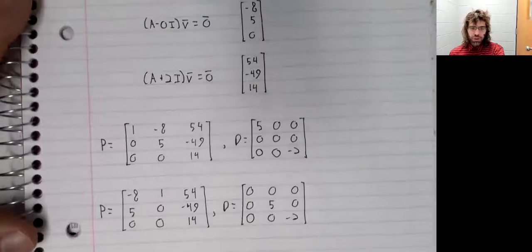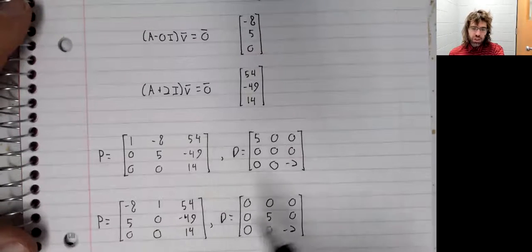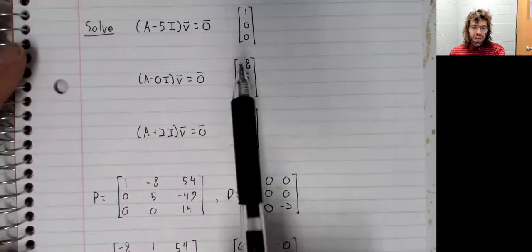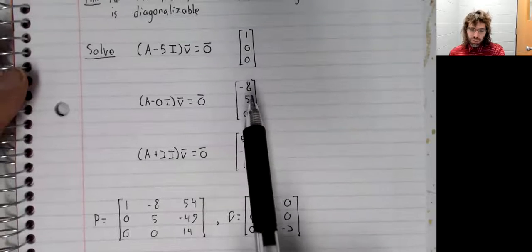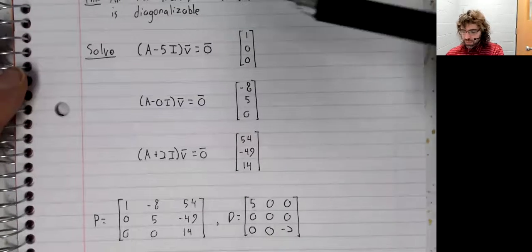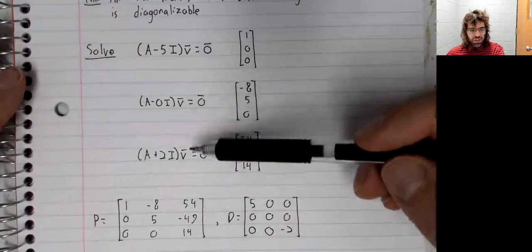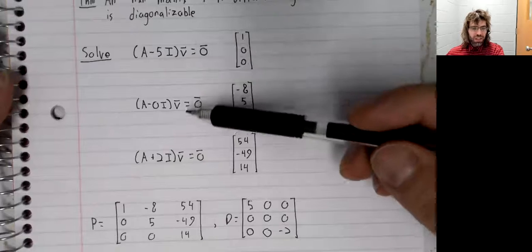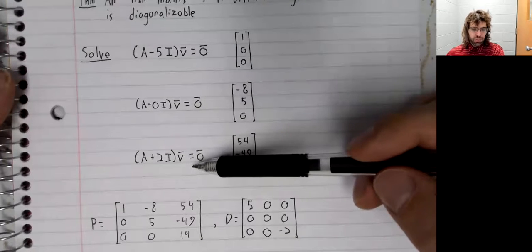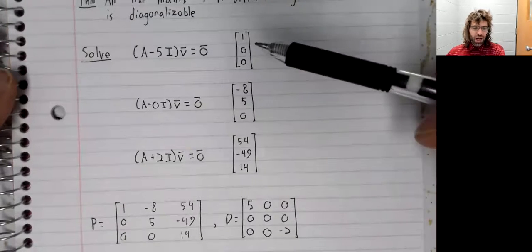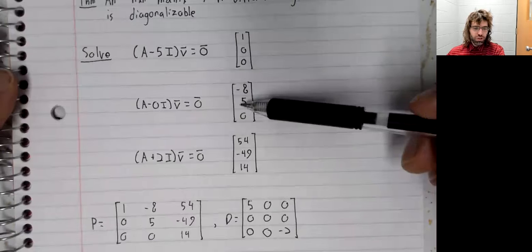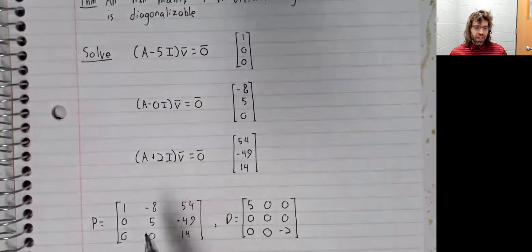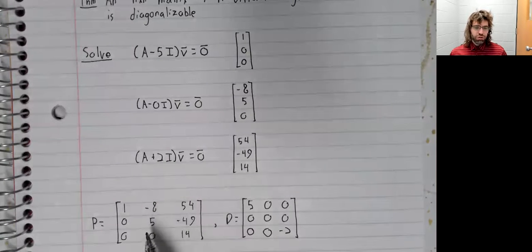Similarly, diagonalizations aren't unique because eigenvectors aren't unique. All three of these equations have infinitely many solutions. If I'd gotten different solutions from these, I'd have a different matrix P.